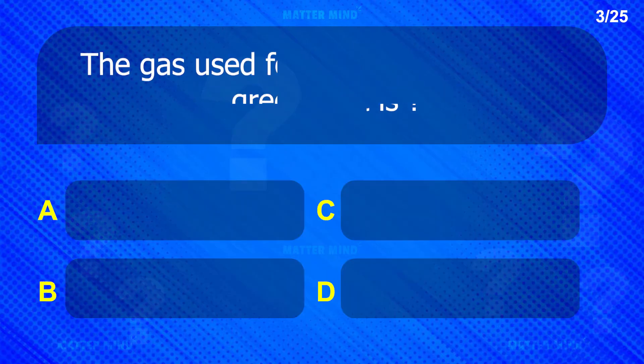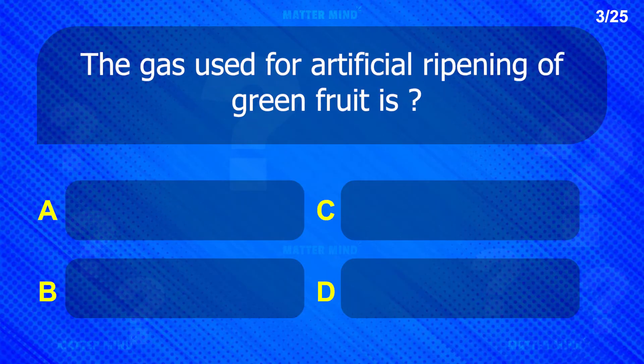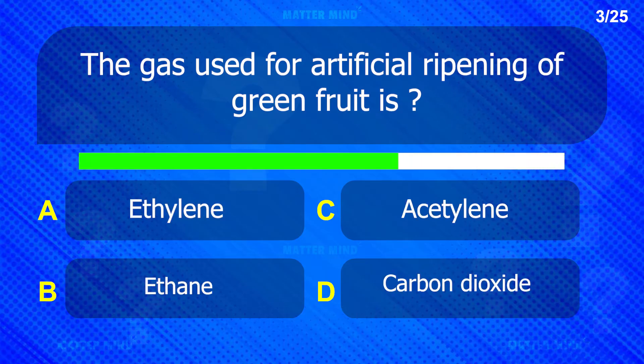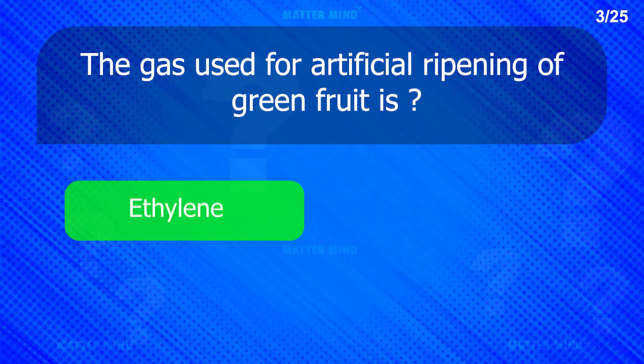The gas used for artificial ripening of green fruit is: Ethylene.